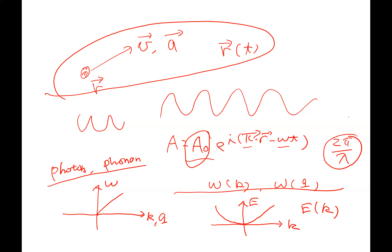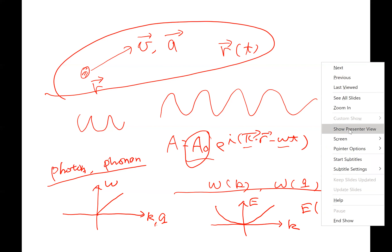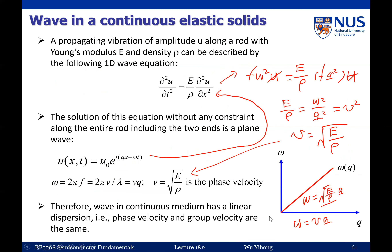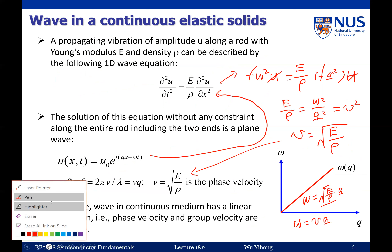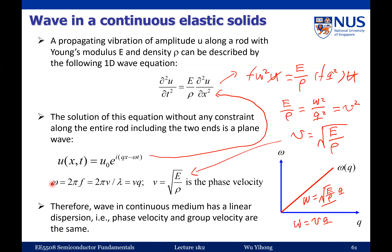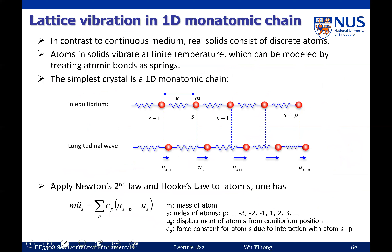For the continuous medium approximation, we obtained a linear ω-q relation. Now we look at a real solid, which consists of discrete atoms, to see to what degree the continuous medium approximation is still applicable. We start with a simple model called a monatomic chain — a one-dimensional atomic chain consisting of a single type of atom with the same mass.